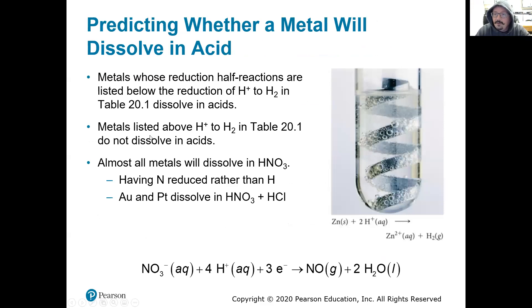Predicting whether a metal will dissolve in acid. So certain things will, a lot of times metals will dissolve in acids, but some won't. Gold and platinum are really good examples of metals that oftentimes won't dissolve in acids. We have to make a very special type of acid called aqua regia a lot of times to dissolve those.